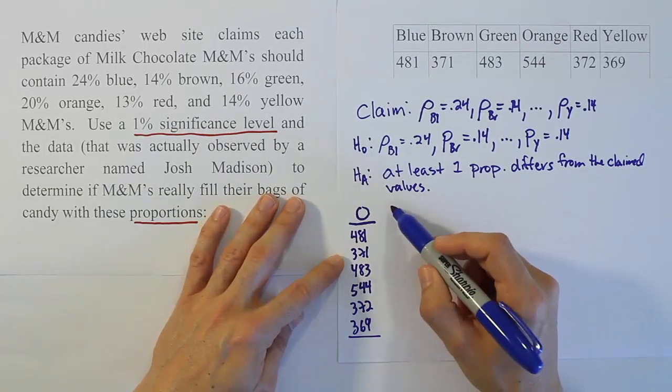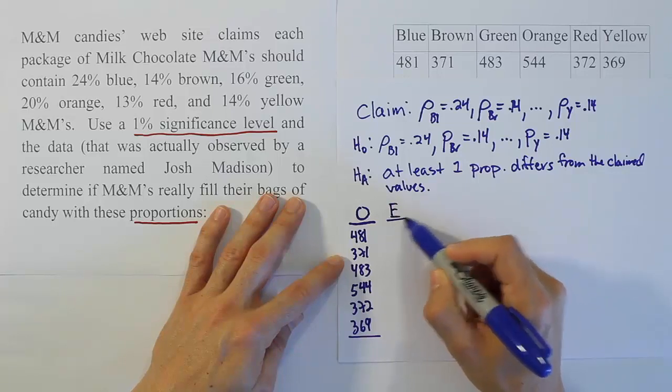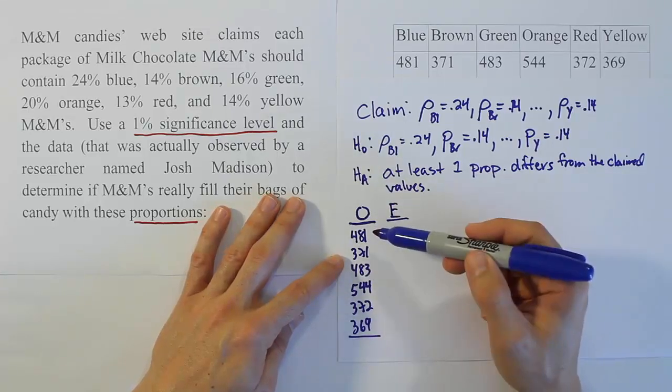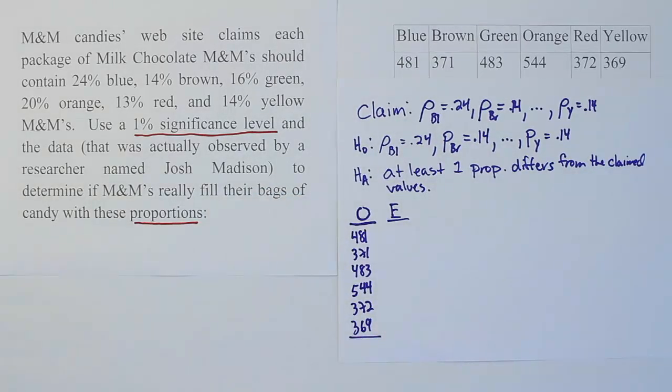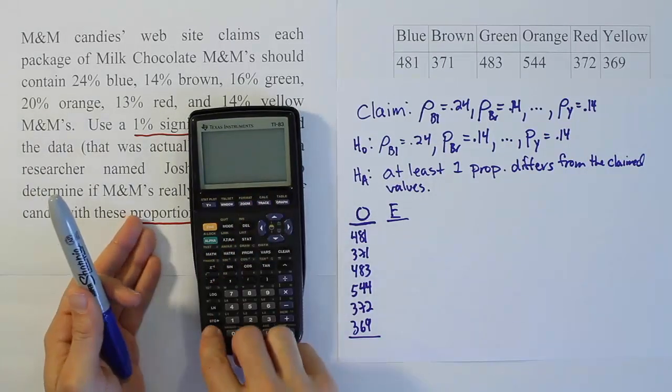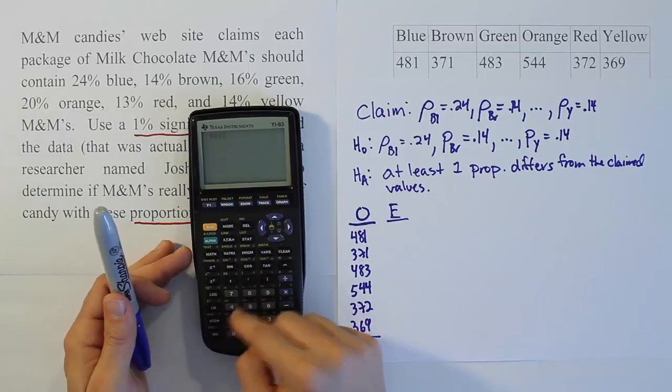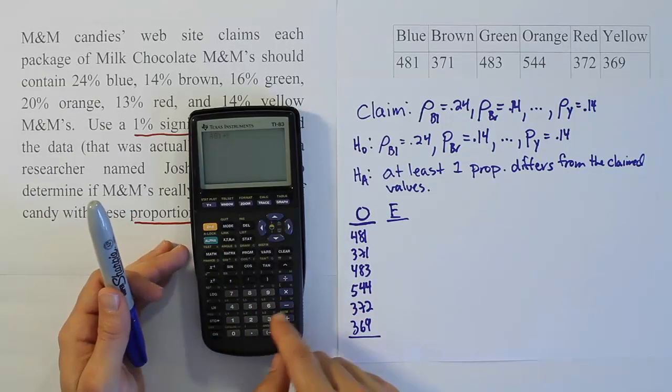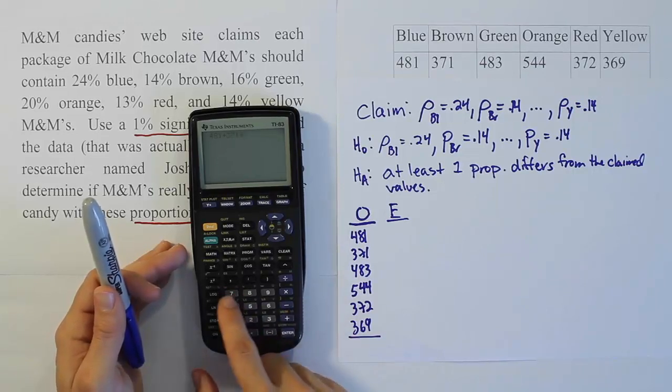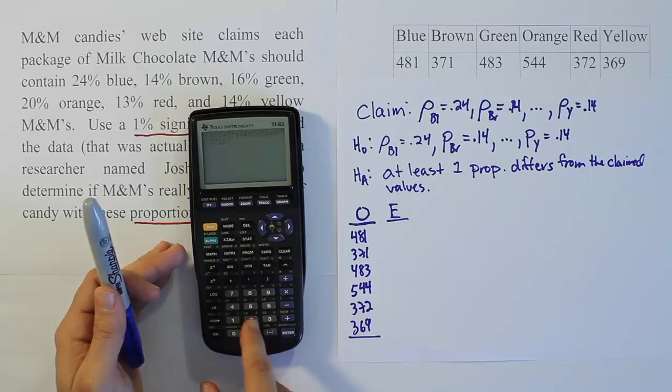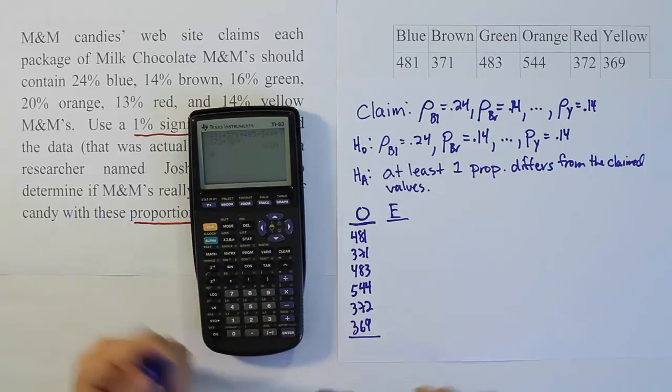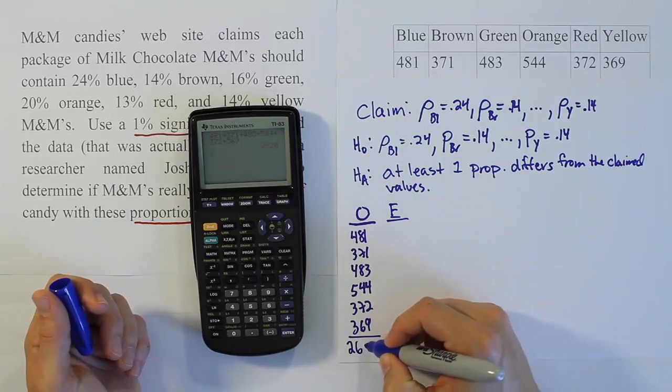Now to do the expectations, we have to get n for the problem by totaling up this observation column, times each of the percentages that were listed. Let's get n first, then we'll do the multiplication. 481 plus 371 plus 483 plus 544 plus 372 plus 369 equals 2620.